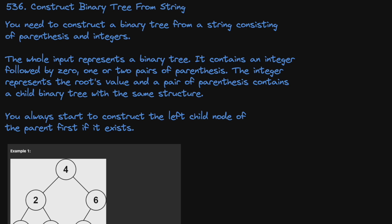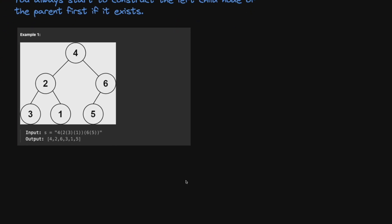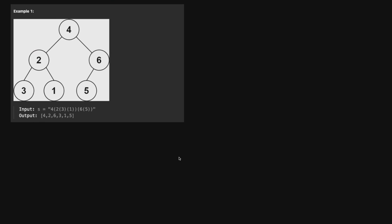Now that we've read the prompt, let's look at a quick example. We're given this binary tree — here's the visual representation — and this is how it's actually represented: 4, 2, 3, 1, 6, 5.